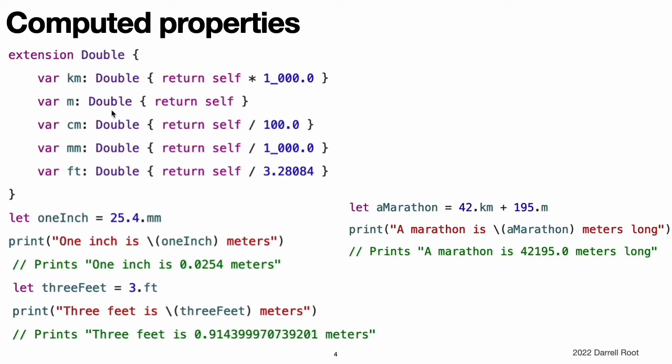The expression 1.m is considered to calculate a double value of 1.0. Other units require some conversion to be expressed as a value measured in meters. One kilometer is the same as 1,000 meters, so the km computed property multiplies the value by 1,000 to convert into a number expressed in meters.